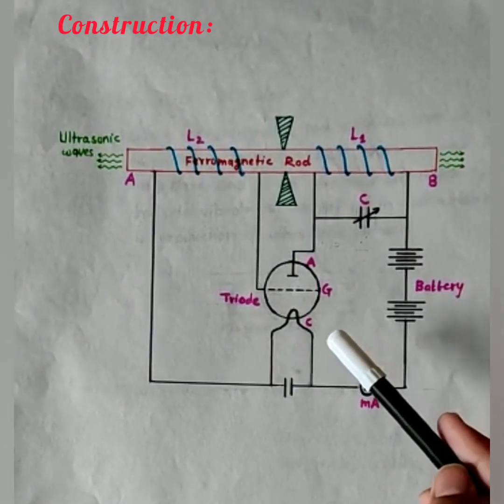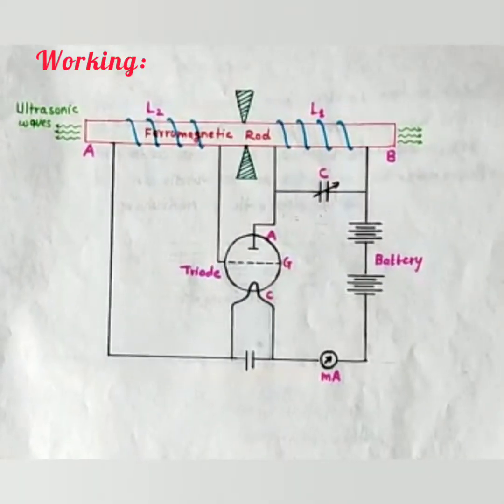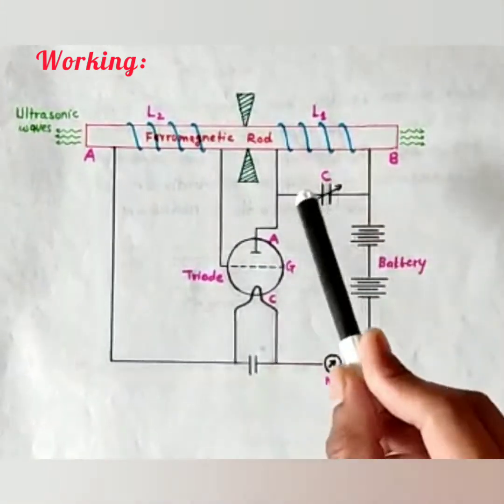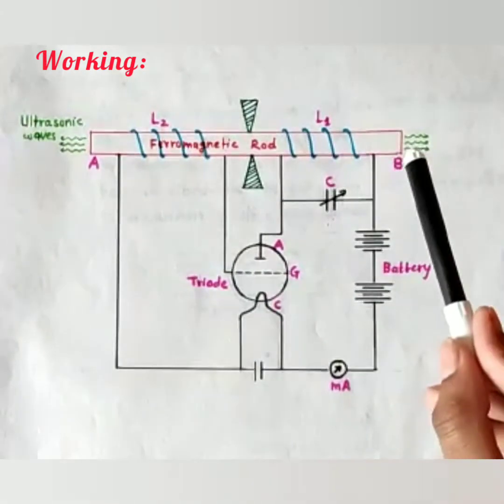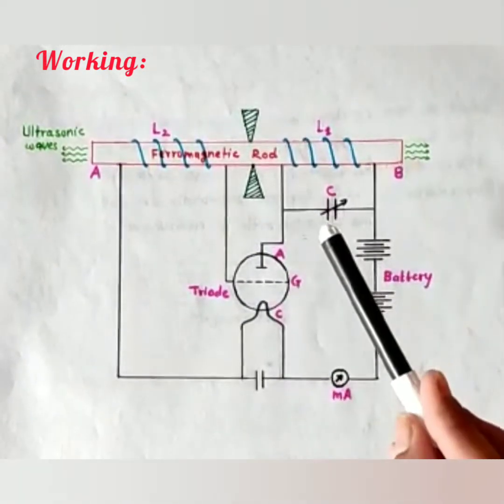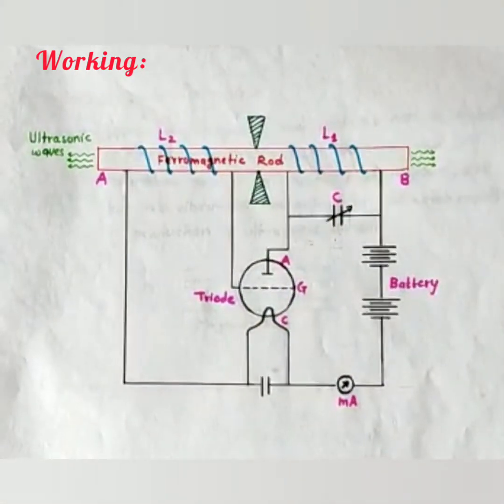Let's see how this oscillator works. When the battery is switched on, firstly, current is passed through the coil L1. Due to this passing current, magnetic flux will generate in coil L1. Due to this existing magnetic flux in L1, EMF will induce in coil L2 due to the phenomena of mutual inductance.